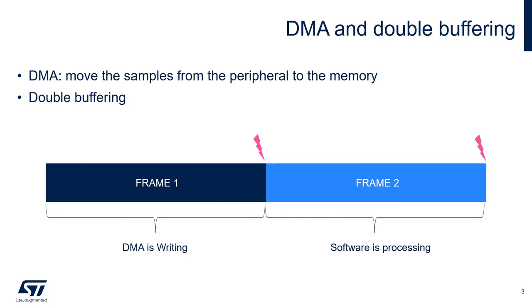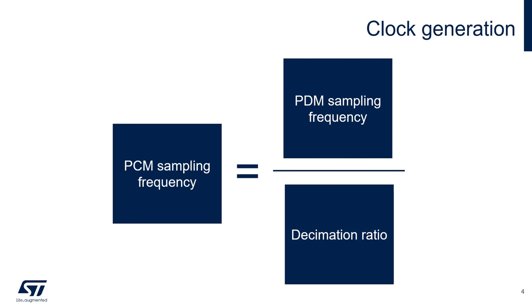As we saw in the previous videos, precise clock generation, which sets the PDM sampling frequency, is critical to obtain the correct PCM frequency. This is especially important when dealing with the software conversion library, which has a limited choice of decimation ratios. The clock is generated by the clock generator of the peripheral, but it strongly depends on the frequency used as its input.